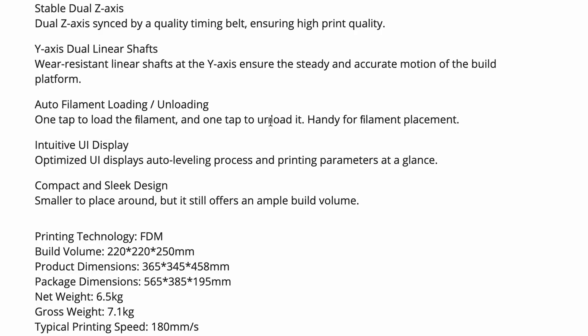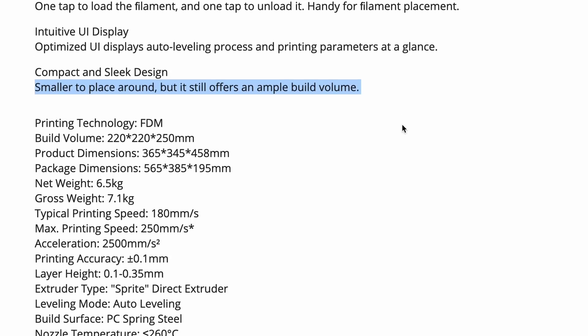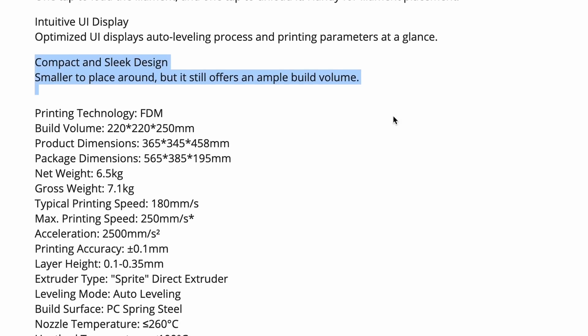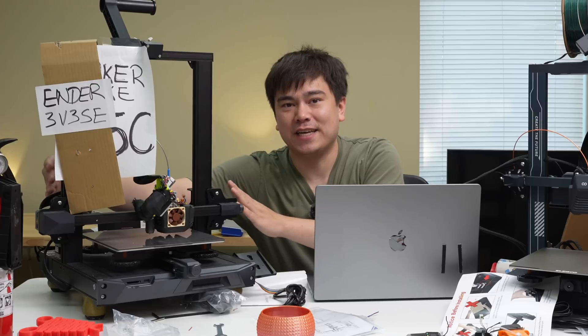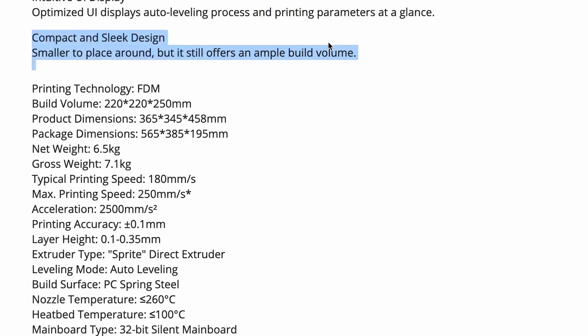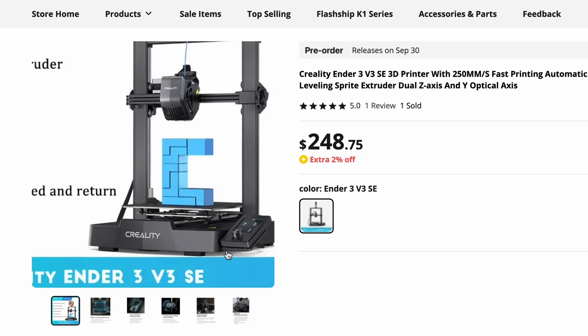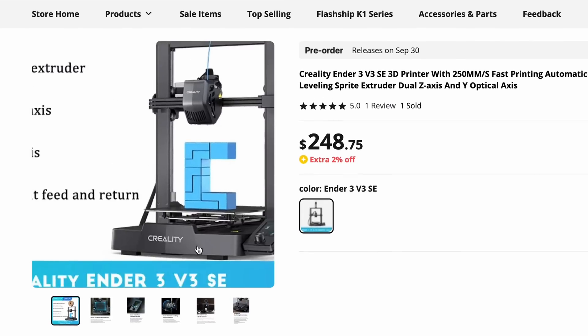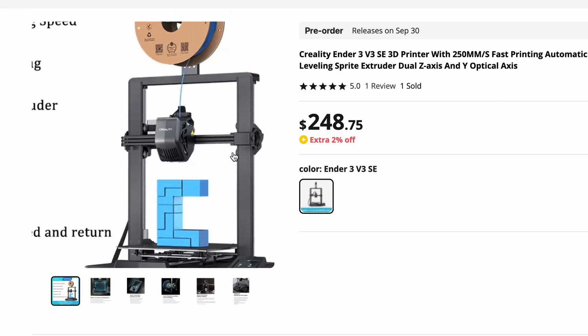It says one tap to load the filament and one tap to unload it. That's just a firmware feature. Intuitive UI display, so optimizes UI display for leveling process and parameters, settings at a glance. Again, that's another meaningless entry on this little list of features. Compact and sleek design, smaller to place around, but still offers ample build volume. By reducing the width of this whole X-axis gantry assembly, they're reducing cost, and they're also going to make it easier to set on your desk. The base of the machine appeared to be injection molded. I imagine they're just going to injection mold the whole bottom in one shot to help keep costs down. The absence of those bed leveling knobs, the automatic strain gauge, Z-probe offset, those are all going to be awesome features, and I'm really excited to see what they come out with.